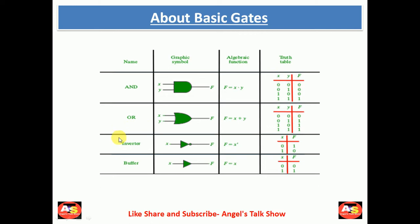This is the NOT gate, or we can say inverter gate. This is the graphical symbol of the NOT or inverter gate, and this is its algebraic function. The output of the NOT gate will be equal to the inversion of the input. This is the truth table of the NOT gate, where we provide only a single input x and get a single output f. When we provide 0 as input, the complement of 0 equals 1, which is the output. When x = 1, the complement is 0, which is the output.